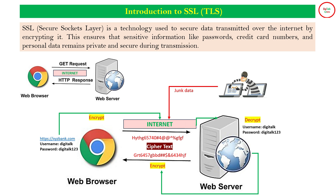This encryption happens at the browser side, and the data is decrypted at the server side. Again, it is encrypted while being sent back to the browser. Whenever data is getting transferred between your client and the server, the data will always be encrypted. You can log into your internet banking website, provide your username and password, and that data gets encrypted when it reaches your server. During your session, whatever data is transferred over the internet to your server will always be encrypted and decrypted at the server end. While traveling over the internet, it is in encrypted form, and when it reaches back to the server, it will again be decrypted.